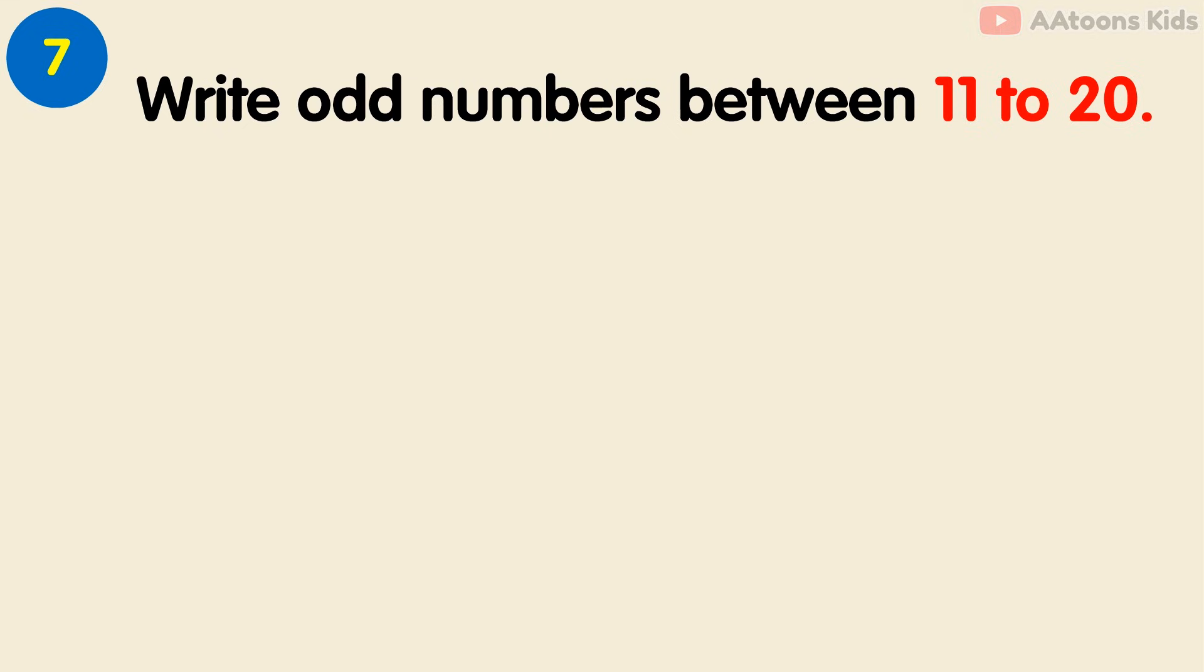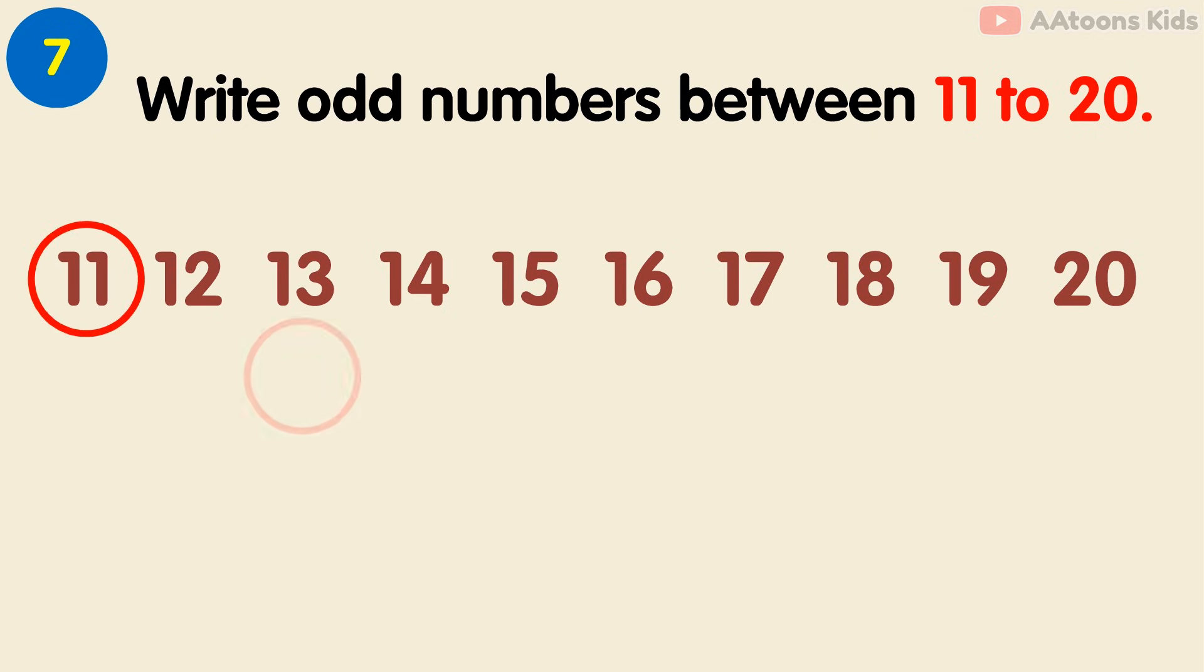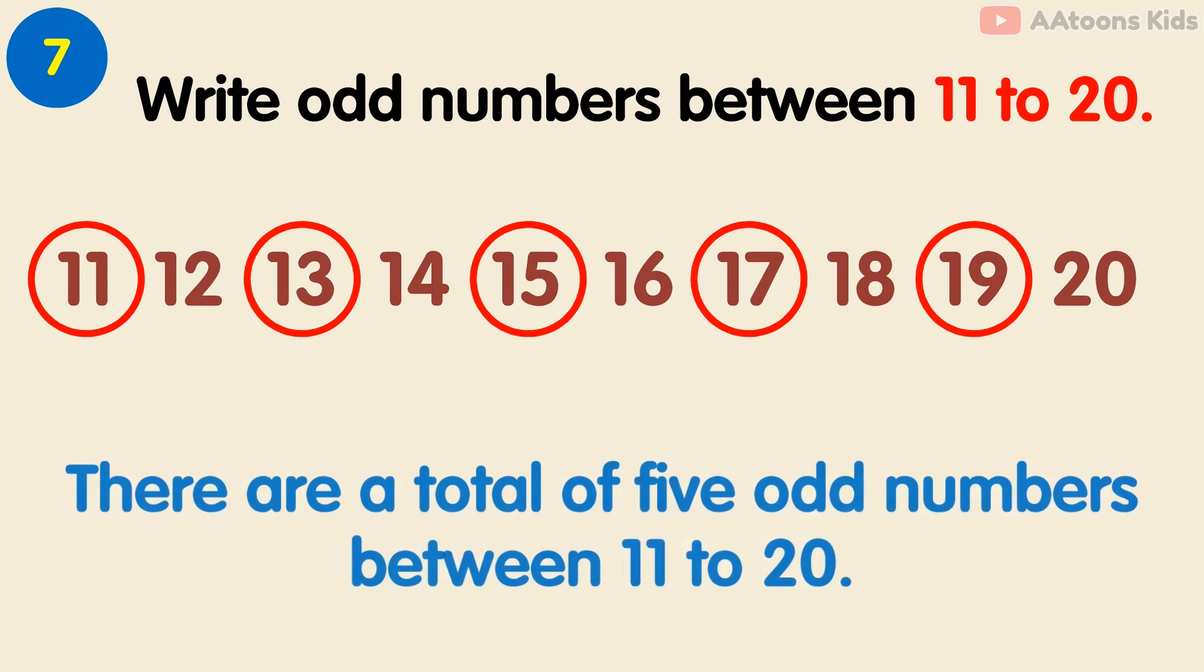Write the odd numbers between 11 to 20. To find out odd numbers, simply write the counting 11 to 20. Now find odd numbers: 11, 13, 15, 17, 19. These numbers are odd numbers. There are total 5 odd numbers between 11 to 20.